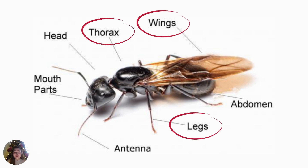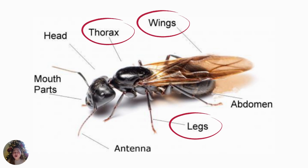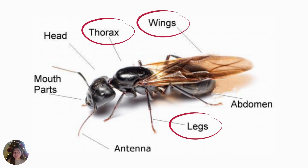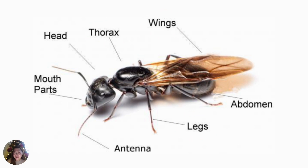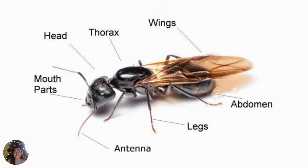Three pairs of legs grow out from underneath the thorax. Most insects have either one or two pairs of wings on top of the thorax. Others do not have wings. What grows underneath the thorax? Correct! It is the legs. And what grows on top of the thorax? Correct! That's the wings.